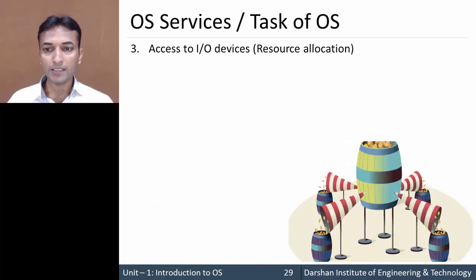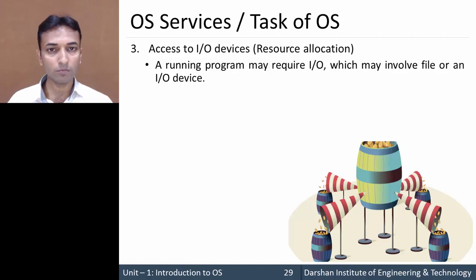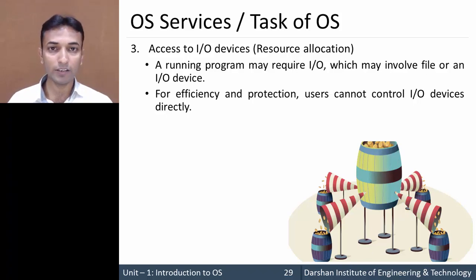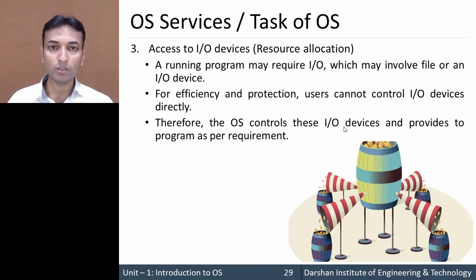The third service is access to I/O devices, also called resource allocation. Whenever a program is running, it becomes a process that may require I/O devices, files, or input/output devices. For efficiency and protection, users cannot directly control I/O devices. The operating system controls these I/O devices and provides them to the appropriate user or process whenever required, centrally managing all resources.